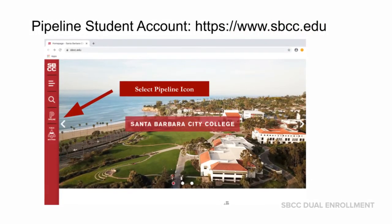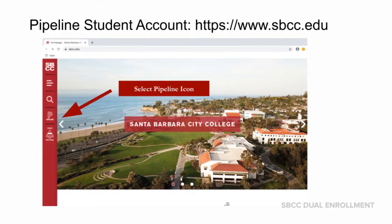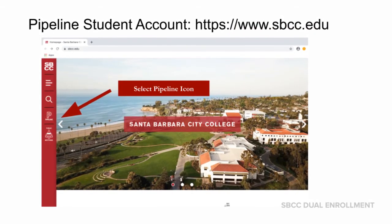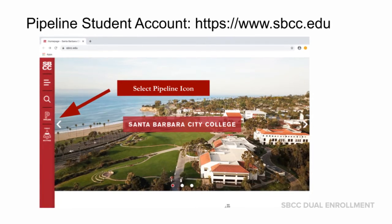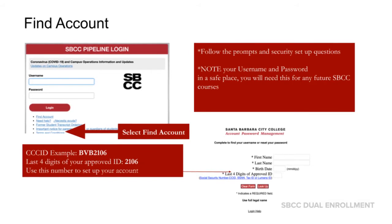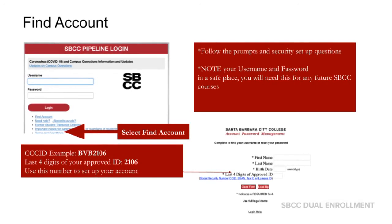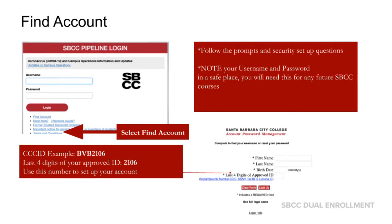Now let's access your pipeline student account. Visit sbcc.edu and select the pipeline icon on the left menu bar. You'll be redirected to the SBCC pipeline login page. If you're a first-time user, under the login select "Find Account" and follow the prompts and security questions to set up your account.